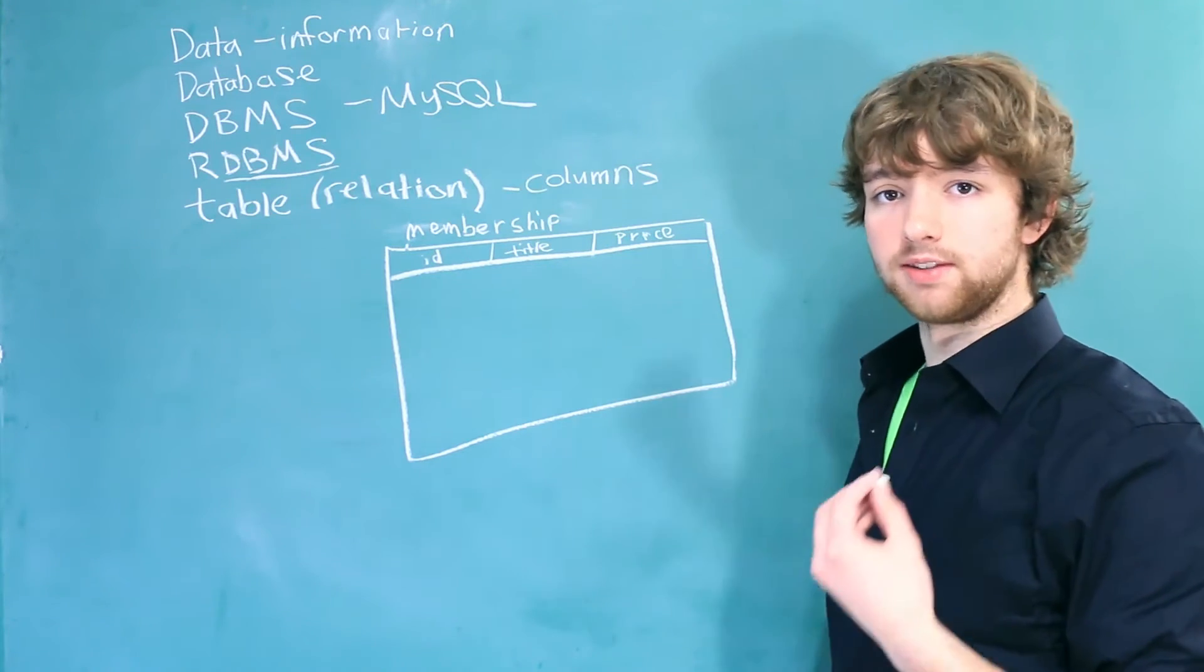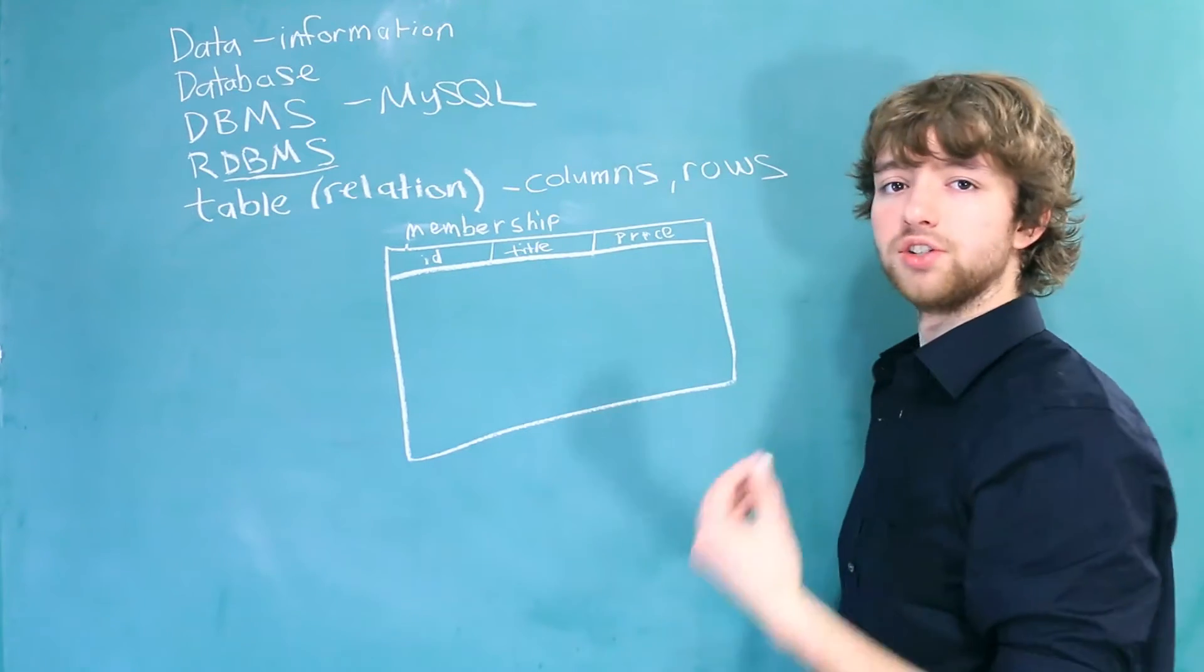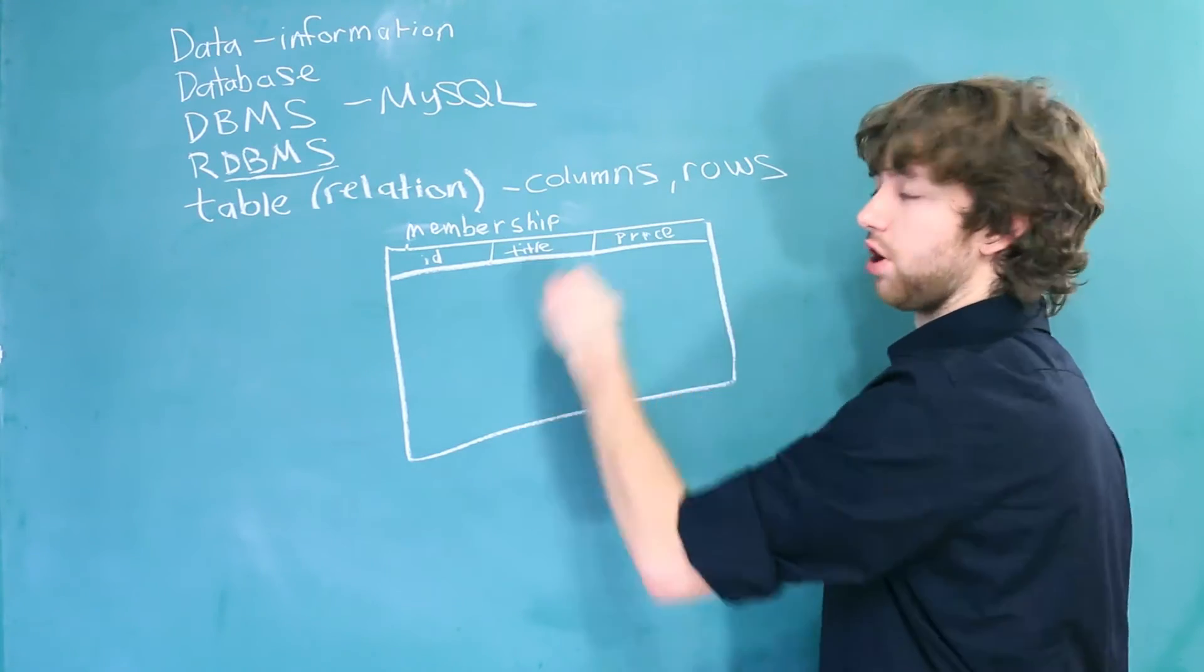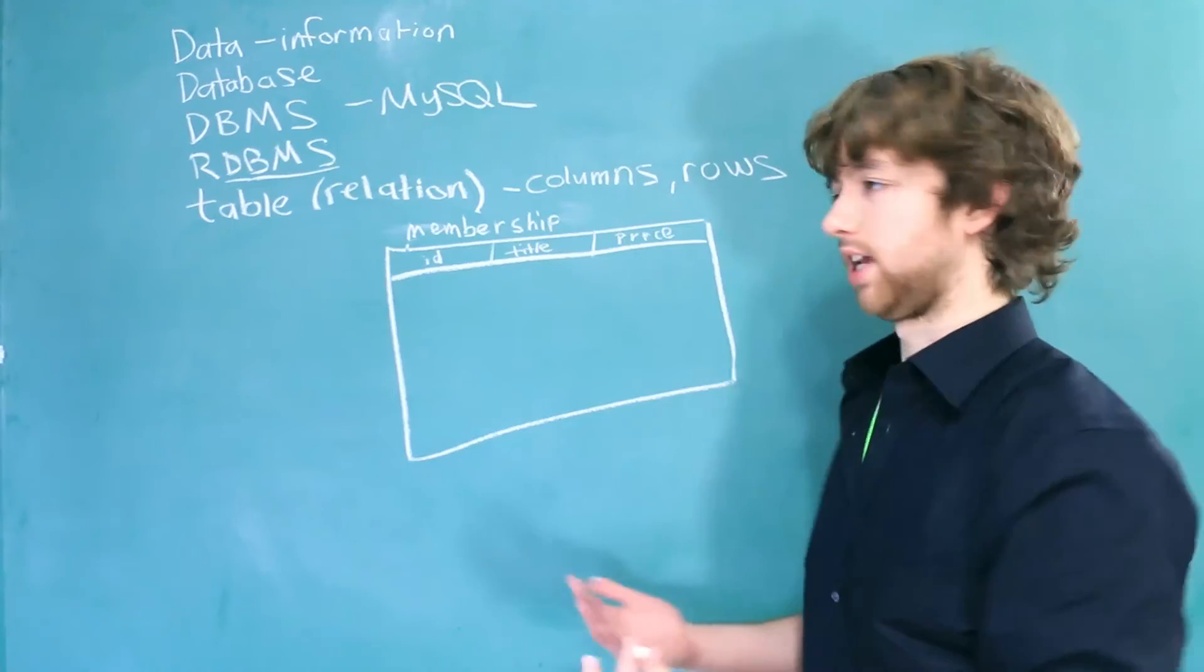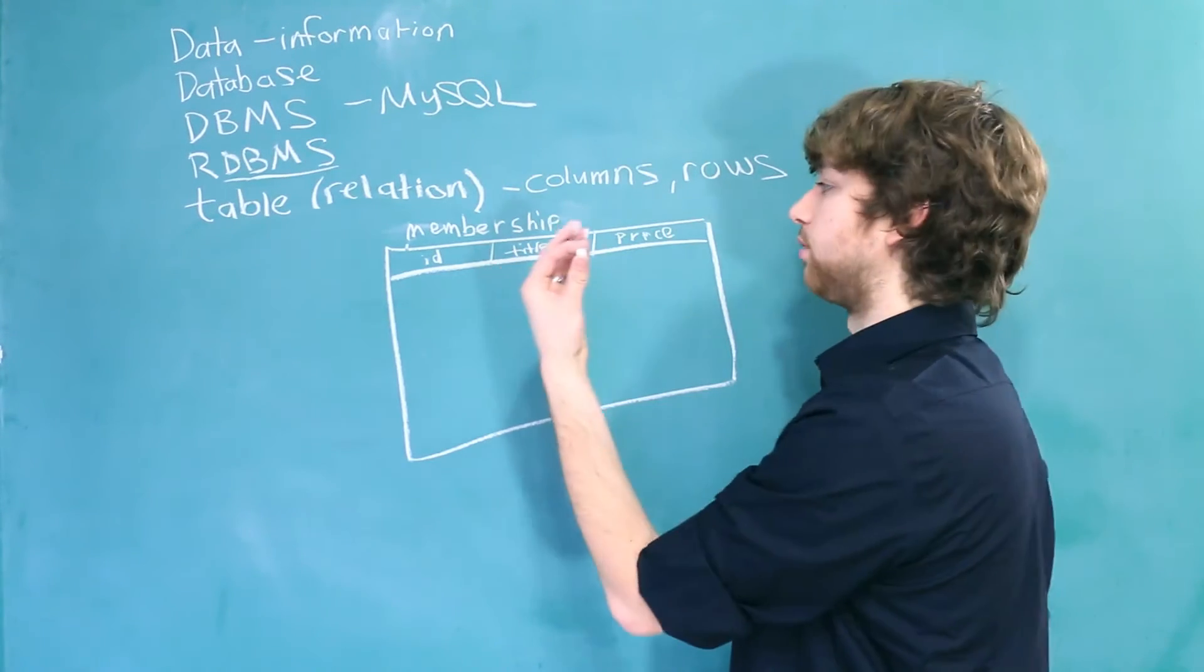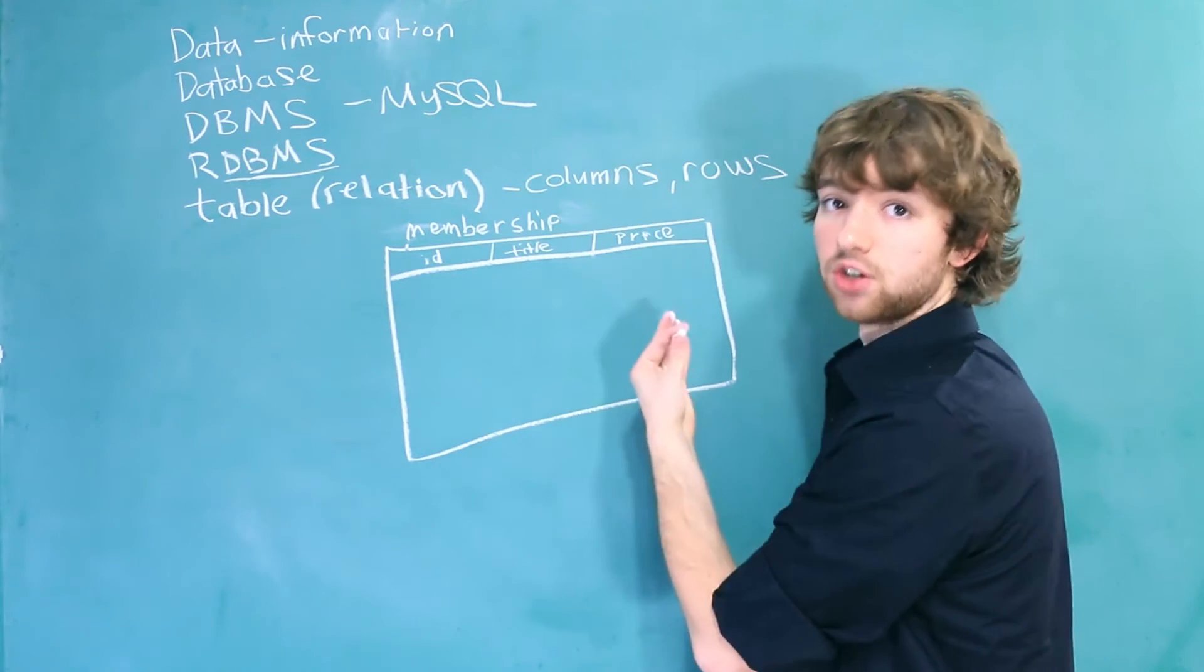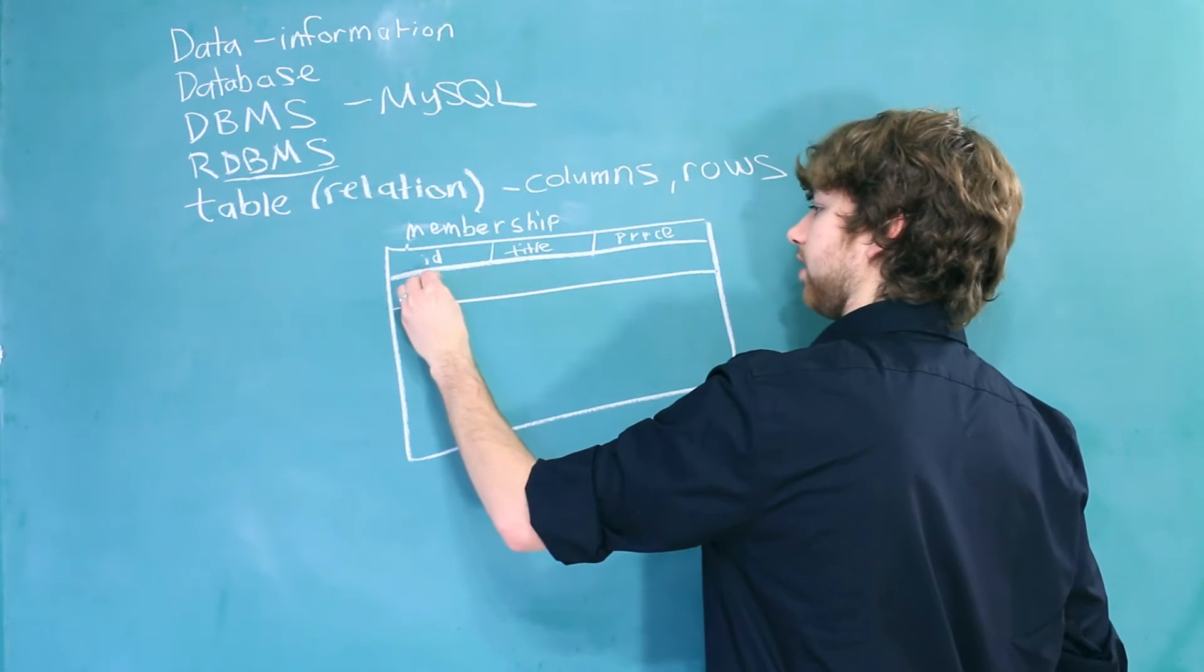Now, the other term you need to know is row. Rows are data that we put in to match these columns. But we give actual data, not just categories of data. So we give an actual ID, we give an actual title, and we give an actual price. So for example, we could have the ID of 1. The title could be silver.